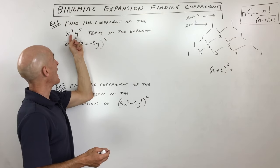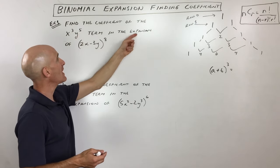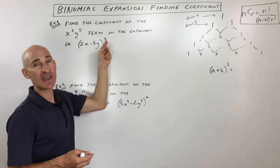First example: find the coefficient of the x cubed y to the fifth term in the expansion of (2x minus 3y) to the eighth power.